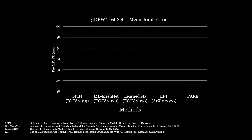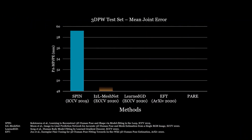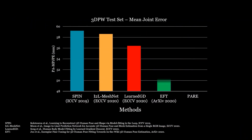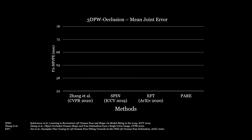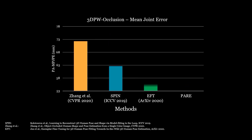Here, we show the joint errors of PEAR and recent state-of-the-art methods on the 3D-PW dataset. PEAR outperforms EFT, the previous state-of-the-art, by a large margin. On the occlusion subset of 3D-PW, PEAR performs significantly better than other methods, too.